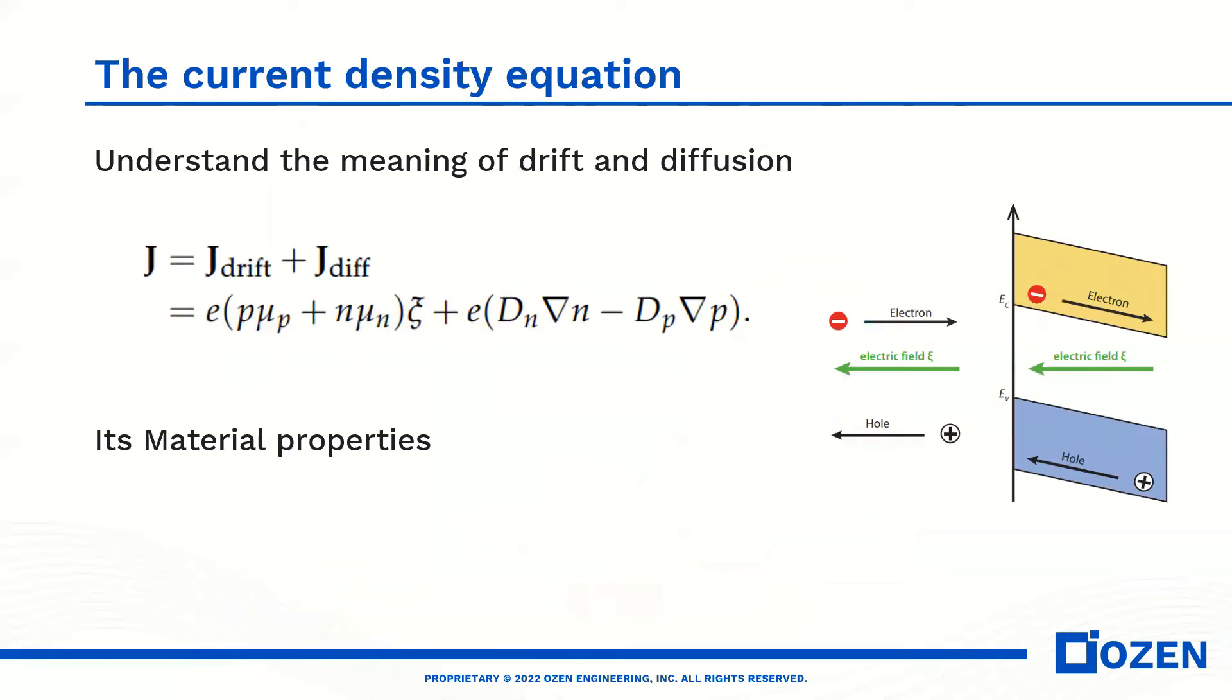So what is the physics behind this solver? We have three equations. The first one is current density equation. In current density equation, you need to understand the meaning of drift and diffusion. As we see in this equation, the first part is the drift and the second part is diffusion.